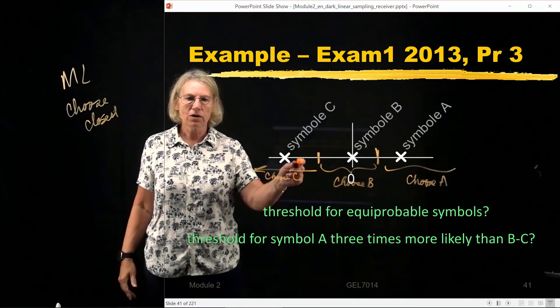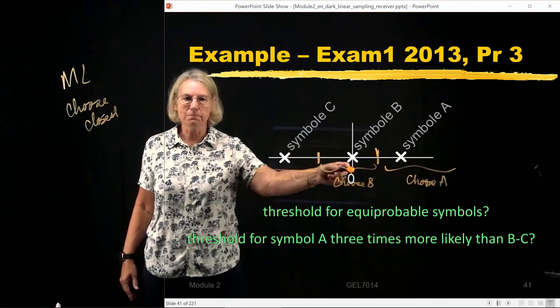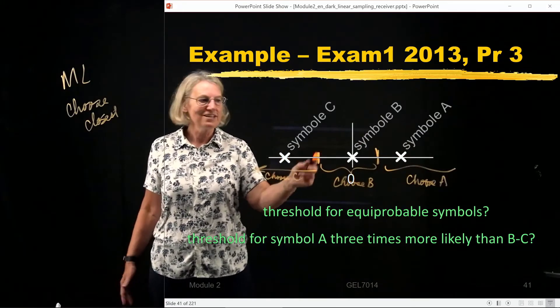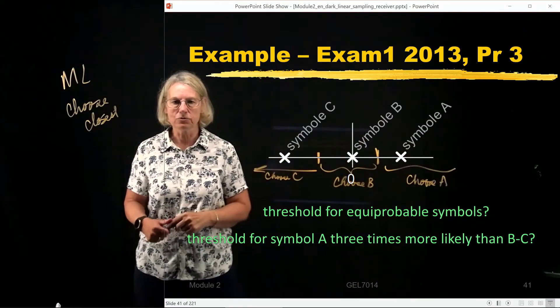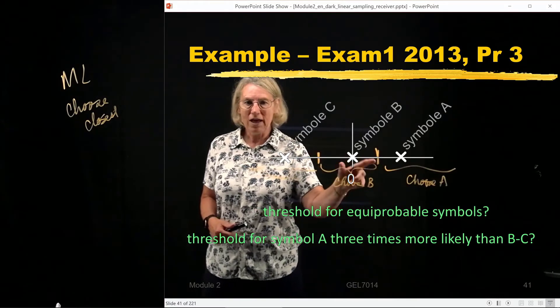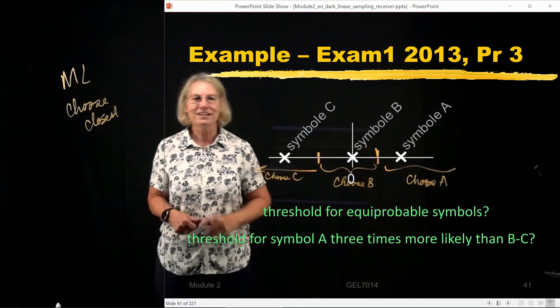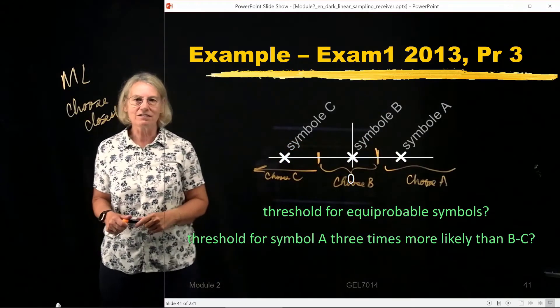So these midpoints give me an easy way to answer this question about choose the closest. If I'm over here, clearly I'm going to be closer to C than B. And A is even farther away than B, so definitely I'm closer to C. So this midpoint is enough for me to choose C. Now when I'm in between the two, in that case, this region is when I choose symbol B. And beyond that, symbol A.